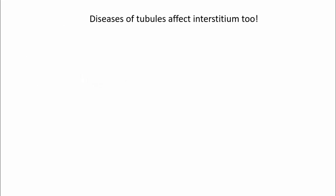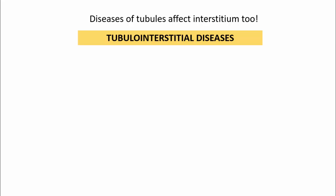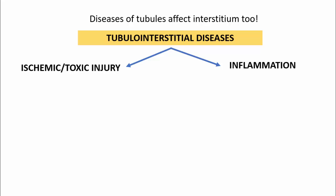We should understand that diseases of the tubules do not affect only the tubules — they also affect the interstitium. That is the reason why these are collectively referred to as tubulo-interstitial diseases. There are two types of tubulo-interstitial diseases: one which is due to ischemic or toxic injury, and another because of inflammation.